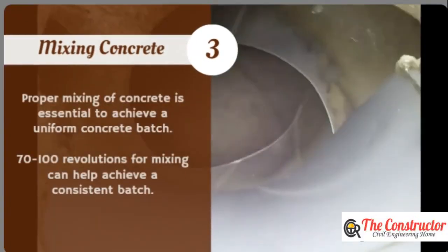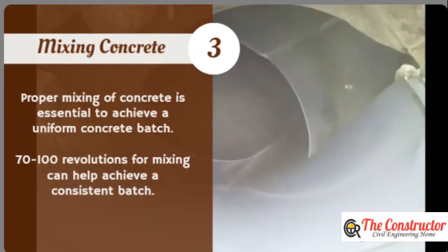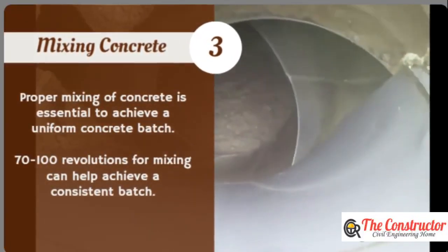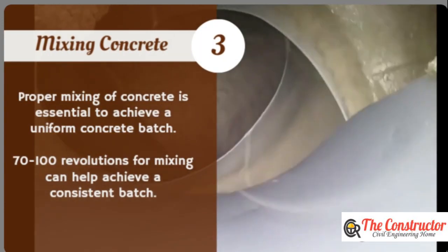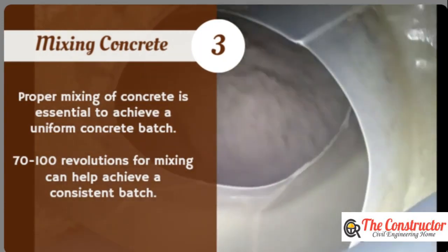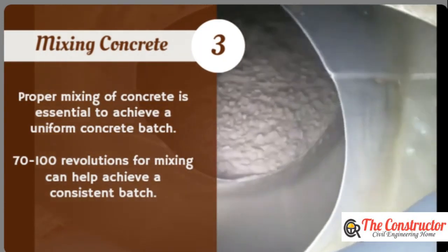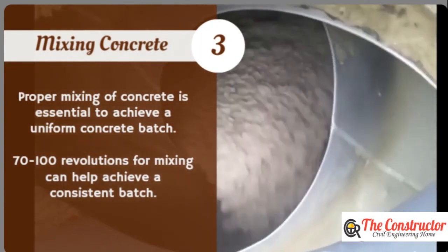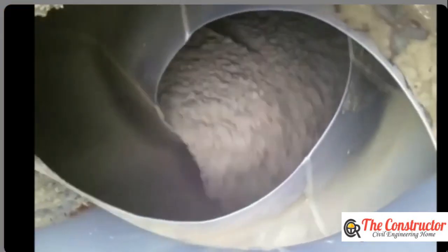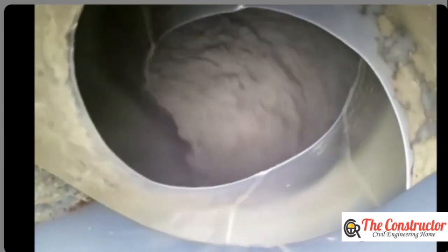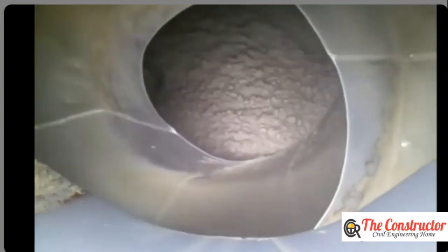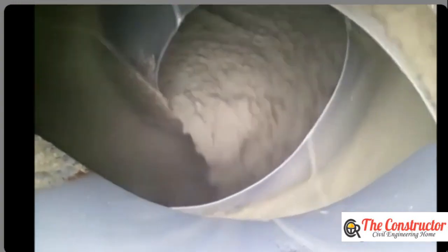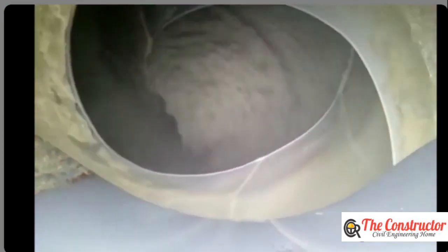Proper mixing of concrete is essential to achieve a uniform concrete batch. 70 to 100 revolutions for mixing can help achieve a consistent batch. The volume of mixed concrete should not exceed 63% of drum volume; otherwise, a uniform concrete batch cannot be achieved.